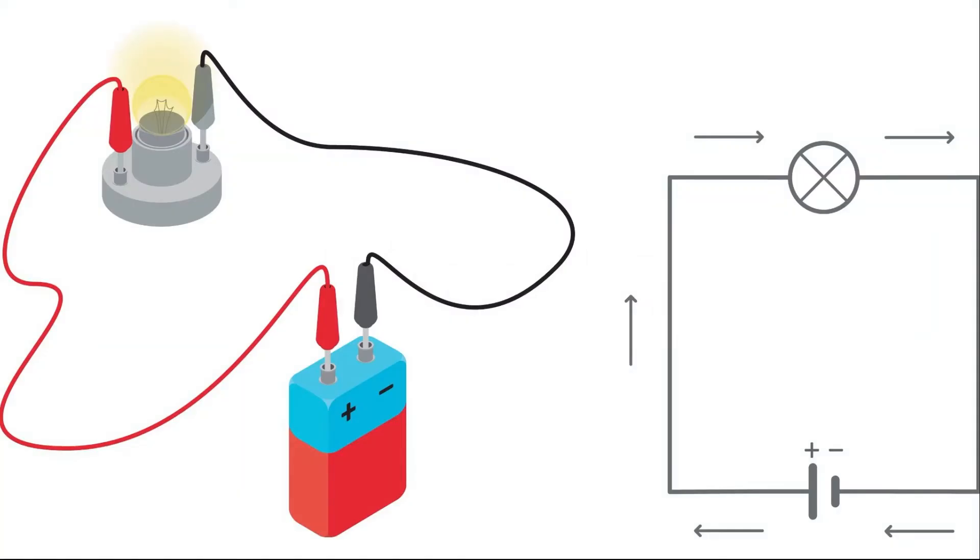Circuits are an application of electromagnetism. Circuits are where we have a connection between, say, a voltage source, like a battery, and something that uses that electrical energy, like a light bulb. On the left, we have just a picture of a circuit with a battery and a light bulb, and on the right, we have what's called a circuit diagram. We'll learn to draw these circuit diagrams in this unit.